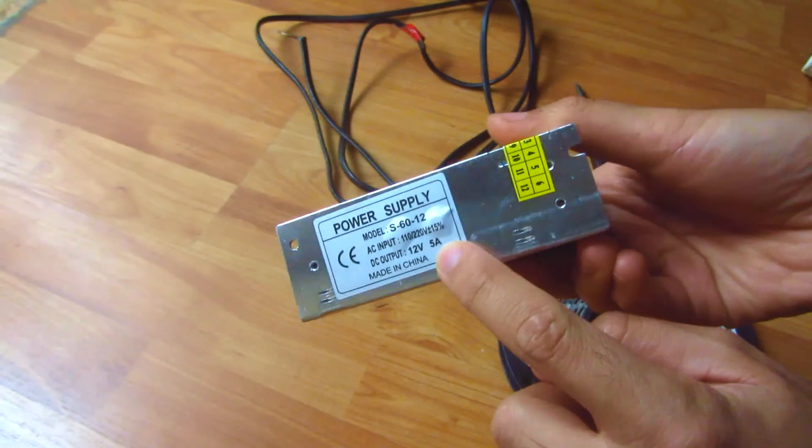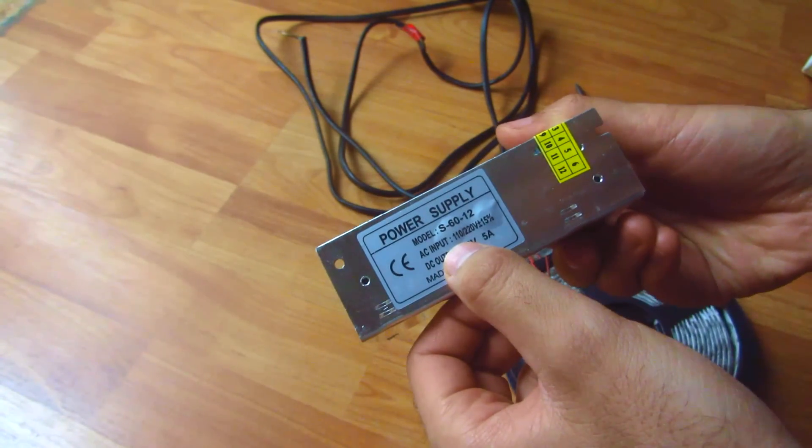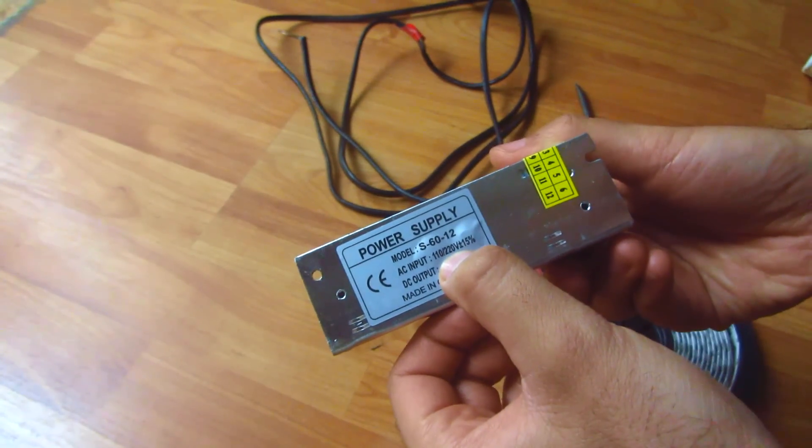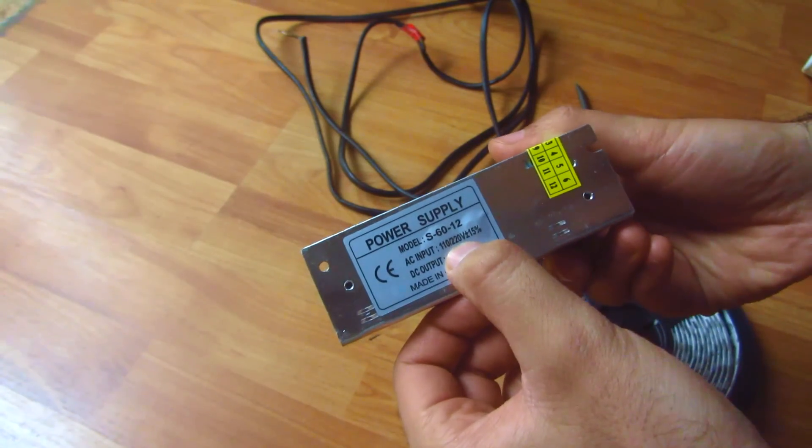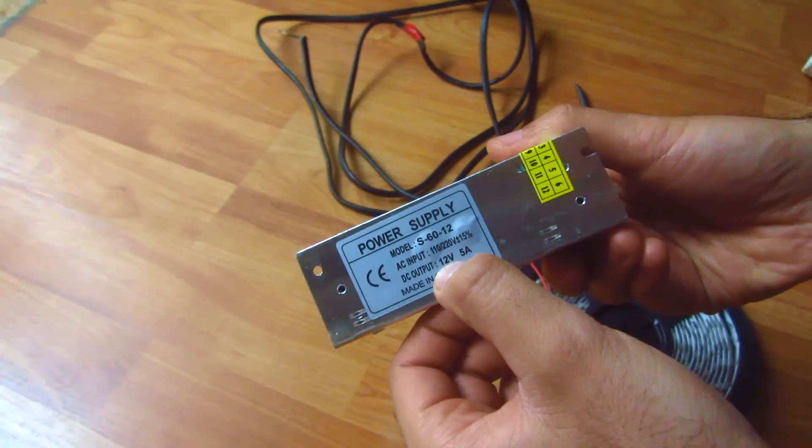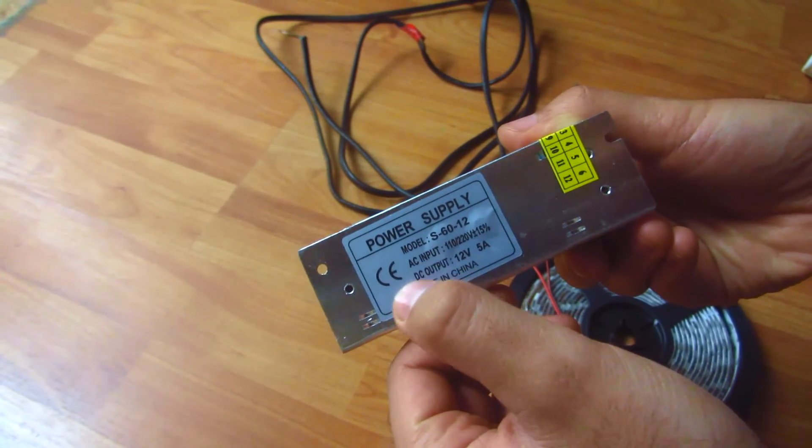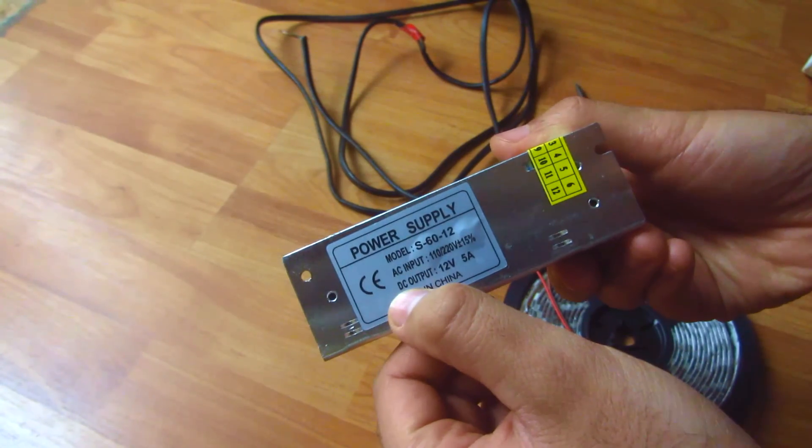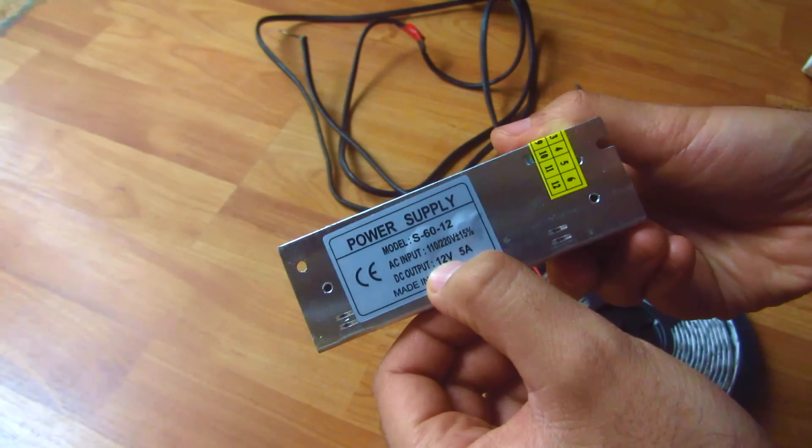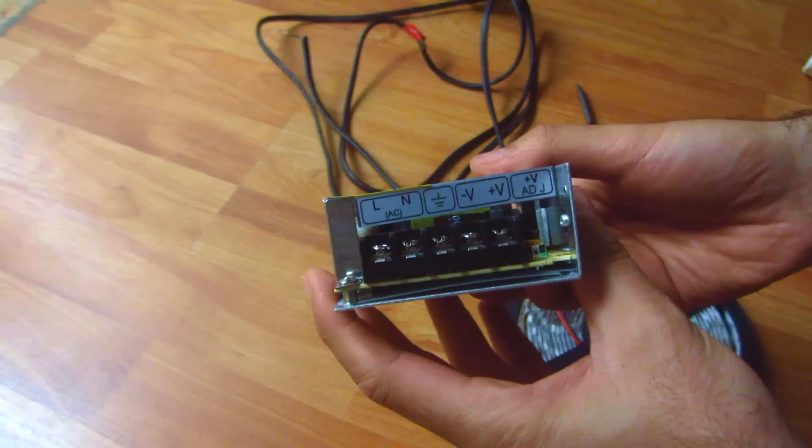It transforms 220 volts AC to 12 volts DC. From alternating current at a higher voltage, it makes direct current at a lower voltage. That's the front part of the transformer.